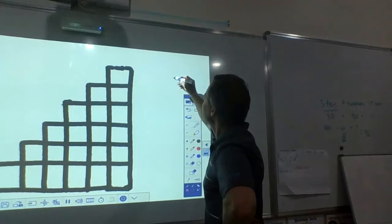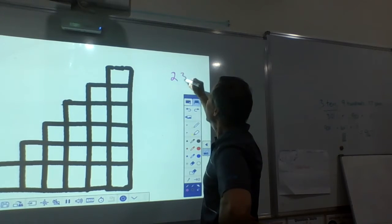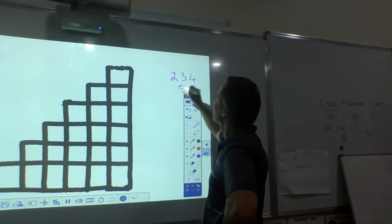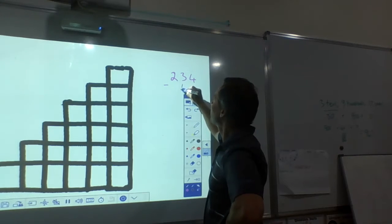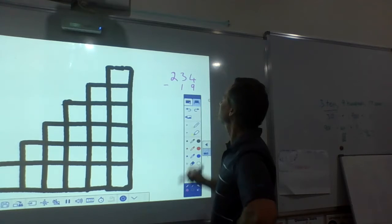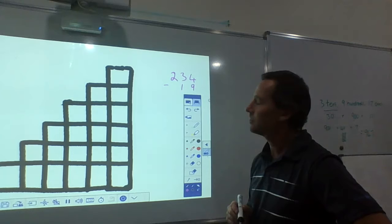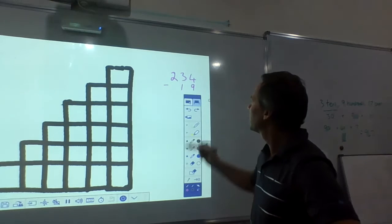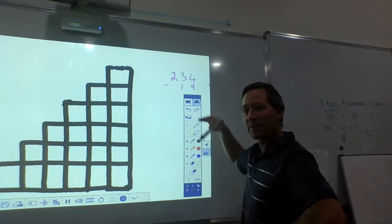We had this equation. 234 take away 19. What do we have to do? Okay, pause it, hear the answer, come back to me.